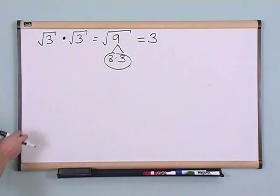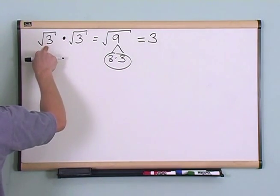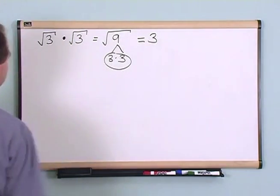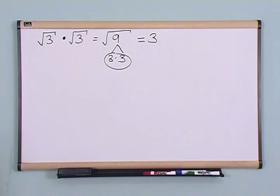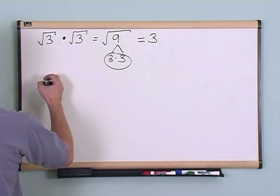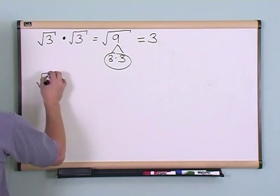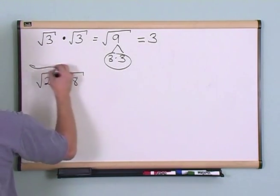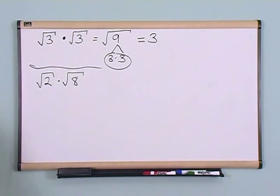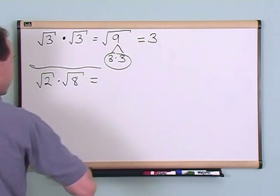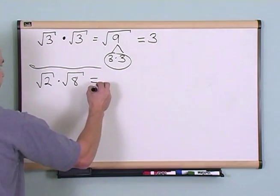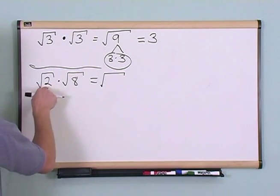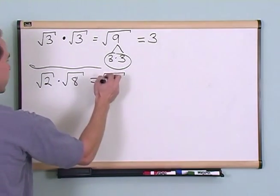If you were to go to your calculator, take the square root of 3 and take another square root of 3 and multiply them together, you would get 3. Now, what if you had the square root of 2 times the square root of 8? Use the same principle: write another radical sign down and multiply what's underneath together.